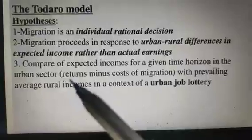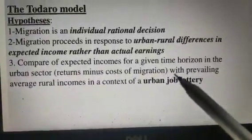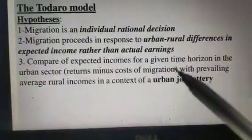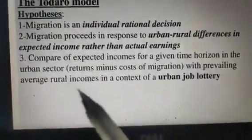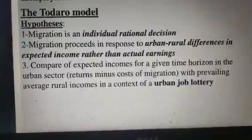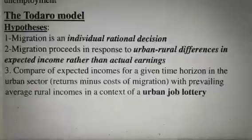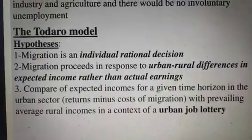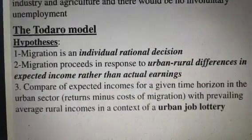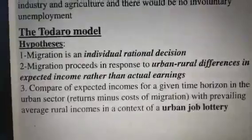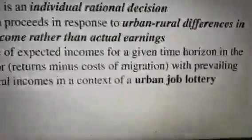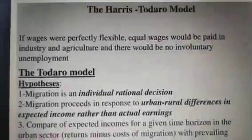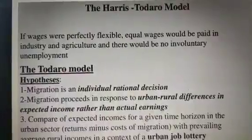The third hypothesis is to compare expected incomes for a given time horizon in the urban sector — that is, return minus cost of migration — with prevailing average rural incomes, in the context of the urban job lottery. When migrants from rural areas get what they expected in the urban area, that may be an urban job lottery. But actually that does not happen, and that is what you have to research during this COVID era.